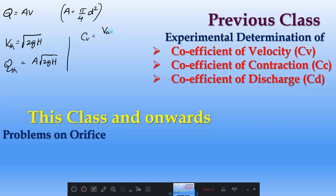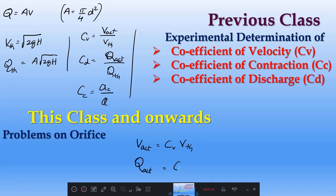Cv equals V actual by V theoretical. Cd equals Q actual by Q theoretical. Cc equals Ac by A. From this you will know wherever V actual is asked, then that is Cv into V theoretical. If Q actual is asked, then Cd into Q theoretical. The flow is very easy here.